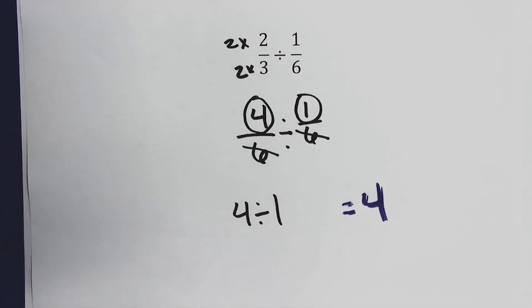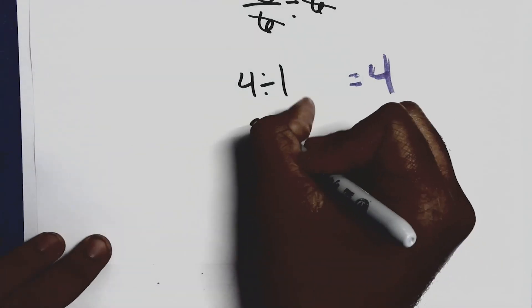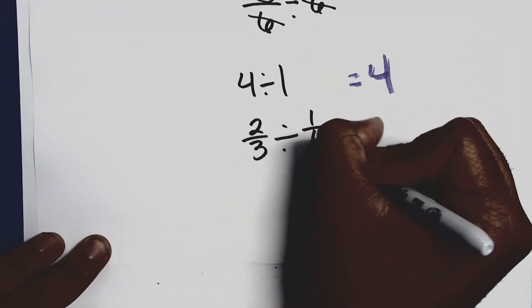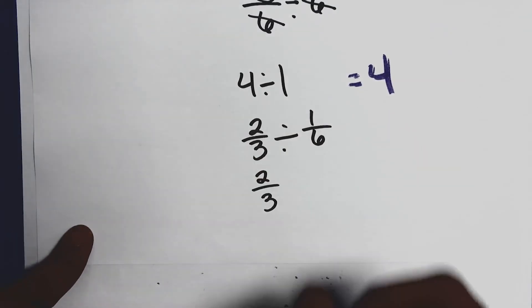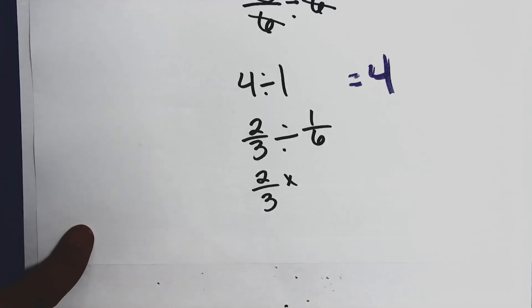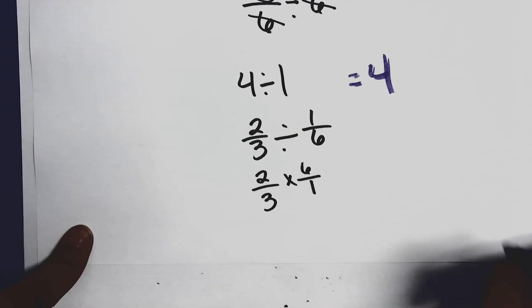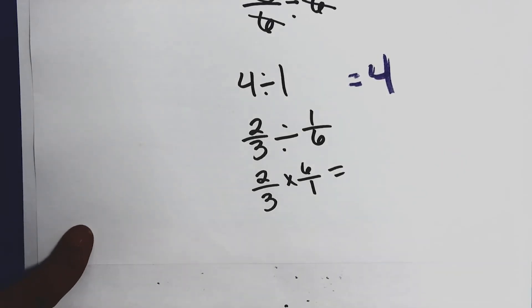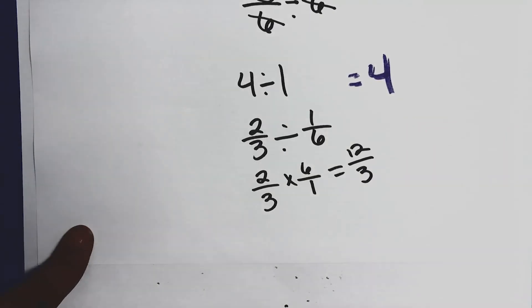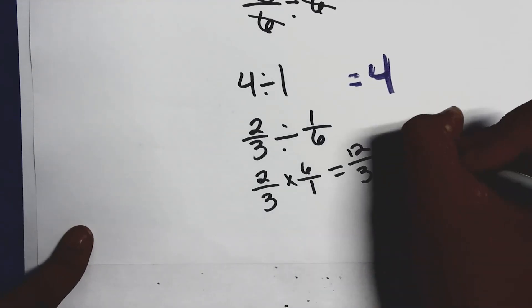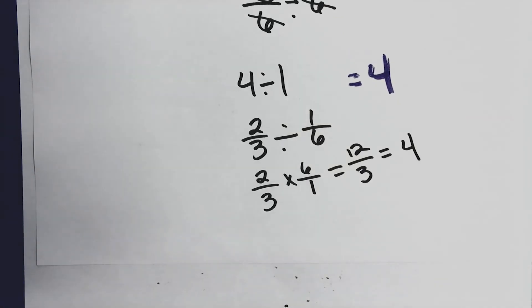Let's look at it one more way — the reciprocal. Same problem: two-thirds divided by one-sixth. I'm going to multiply by the reciprocal because I want to use multiplication. What's the reciprocal of one-sixth? Correct — six over one. So now I can multiply my numerators: six times two gives me twelve, and three times one gives me three. Twelve-thirds is equivalent to four as well. That was a lot of different ways we just solved this problem, but we got to the same answer.